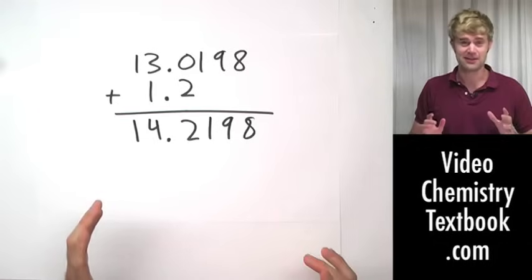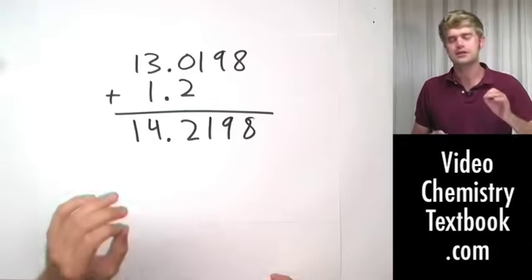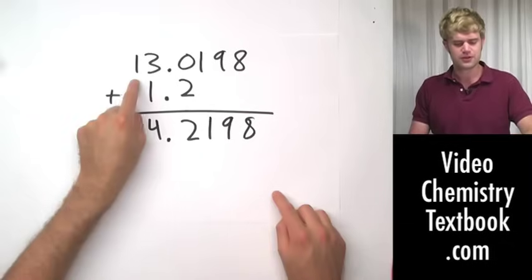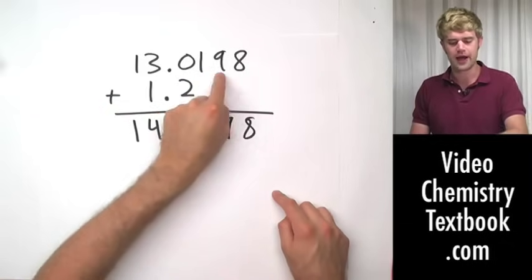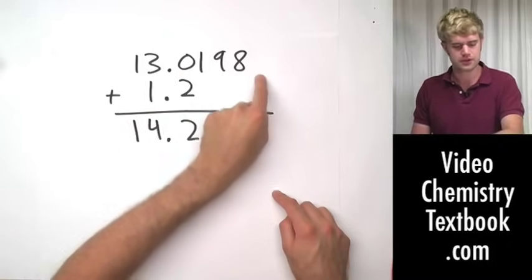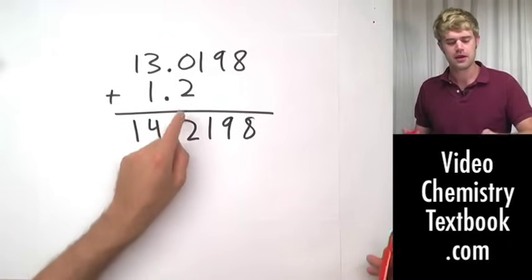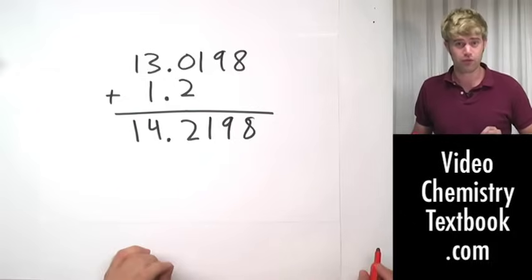That's not easy to say. It's probably not easy to understand. It's a lot easier to demonstrate what I mean than to try to explain it. So this number up here, 13.0198, it has four decimal places. This guy here, 1.2, only has one decimal place.